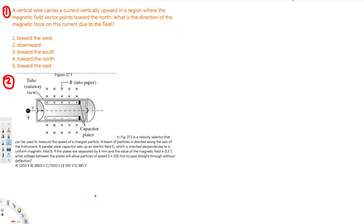Hey, what's going on guys? Let's do this problem right here. This question is asking: a vertical wire carries a current vertically upward in a region where the magnetic field vector points towards the north. What is the direction of the magnetic force on the current due to the field? They are asking for the force direction.